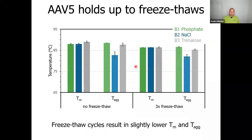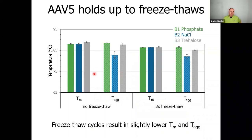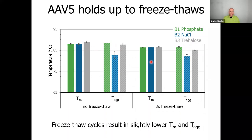Looking at the effects of freeze-thaw cycles on AAV5 — no freeze-thaw on the left and three freeze-thaw cycles on the right — with melting temperatures in solid bars and aggregation temperatures in hatched bars: both melting and aggregation temperatures shift to slightly lower values after three freeze-thaw cycles. For the sodium chloride condition, melting shifts by about 1.5 degrees Celsius and aggregation by about 0.6 degrees. So there is a slight destabilization of AAV5 during freeze-thaw cycles, but it is not very much.